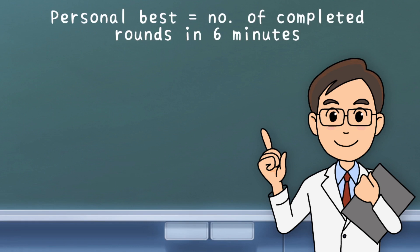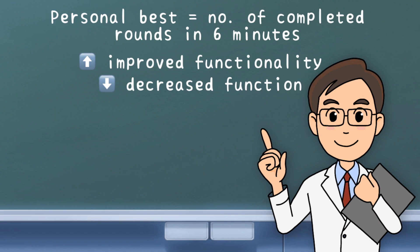Congratulations! You have now calculated your personal best. This is the number of rounds you have completed in the duration of 6 minutes. The next time you perform the test, if you walk a greater distance, it indicates improved functionality. But if you walk a lesser distance, it is possible your functionality has been compromised.